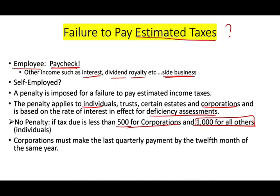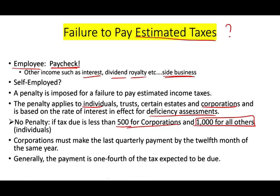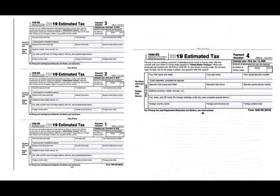A corporation must pay the last quarterly payment by the 12th month of the same year. Generally, payments are one-fourth each quarter. For example, for 2019: the first estimated payment is due April 15th, the second voucher payment June 17th, the third September 16th, and the fourth payment due January 15th, 2020. I'm doing this recording on January 18th, 2020, so whoever did not make their last quarterly payment is three days late.